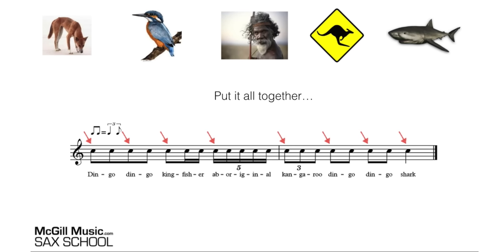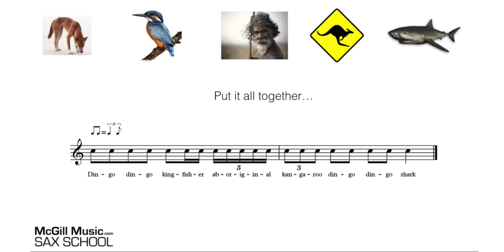That's a real tricky one — let's try that again: dingo, dingo, kingfisher, aboriginal, kangaroo, dingo, dingo, shark. That is a really tricky rhythm, and if you were just presented with that starting to learn rhythms, it would probably be quite overwhelming. But using these rhythm words, it's really going to help you get a handle on these rhythms and understand them as you're going through.